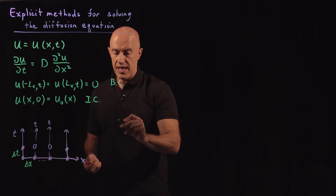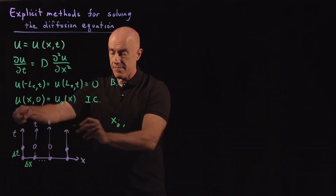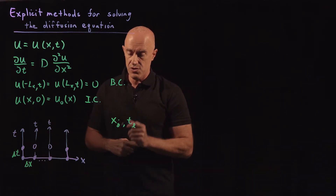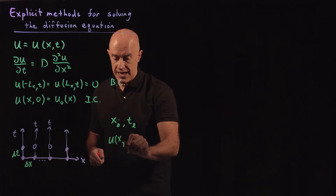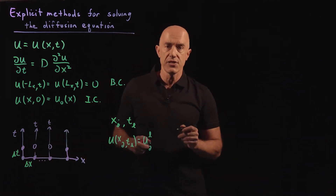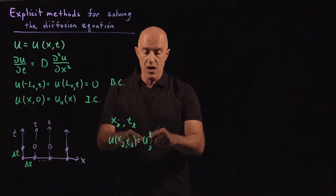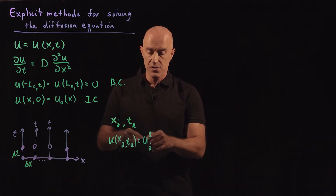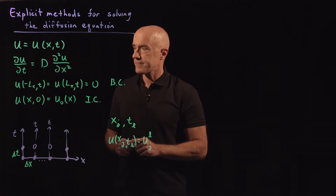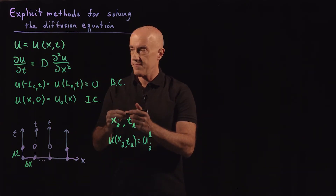The grid points in position are labeled x sub j, and the time steps are labeled t sub l. We call u at x_j and t_l as u sub j superscript l. The standard notation is that the spatial index goes on the bottom and the time index goes on the top. So this doesn't mean u to the l power — it means u at the l-th time step at the j-th spatial position.